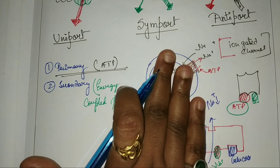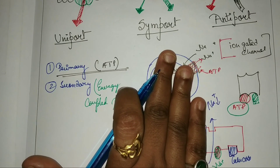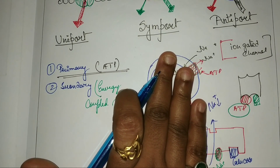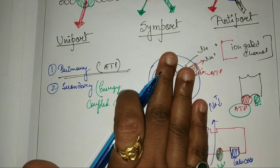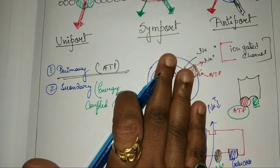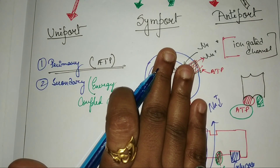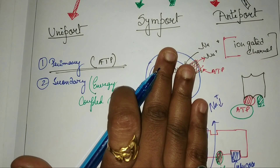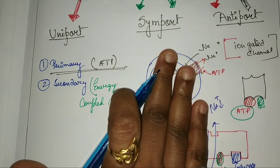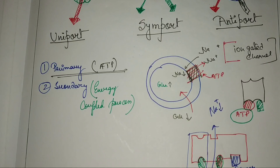The energy produced by sodium moving from high to low concentration is used to pull glucose from low concentration to high concentration. When sodium moves from high concentration to low concentration, it produces energy, and that energy helps pull glucose from outside to inside. This is secondary active transport.